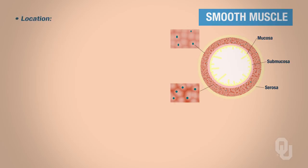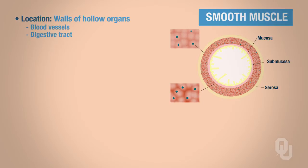Let's start with the location of smooth muscle. It's in the walls of hollow organs — for example, the walls of blood vessels, the walls of the digestive tract, the walls of certain structures of the respiratory tract, and the reproductive tract.